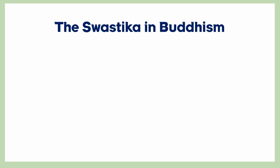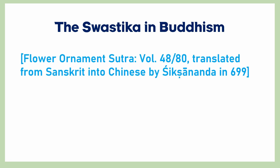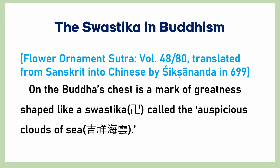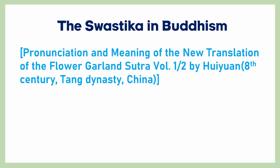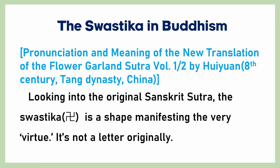In some Buddhist scriptures, the swastika is mentioned. According to the Flower Ornament Sutra, on the Buddha's chest is a mark of greatness shaped like a swastika, called the auspicious clouds of sea. Another sutra mentions that, looking into the original Sanskrit sutra, the swastika is the shape manifesting the very virtue. It is not a letter originally.